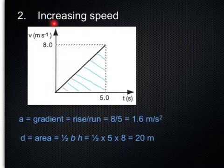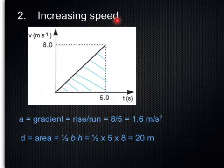The second type is increasing speed. To work out acceleration, you work out a gradient, which is rise over run. Rise is 8, run is 5. 8 divided by 5 is 1.6 meters per second squared.